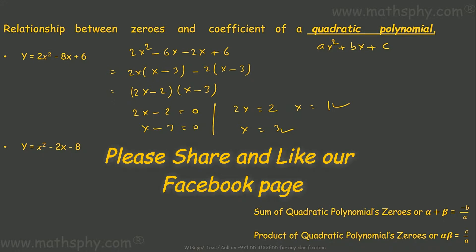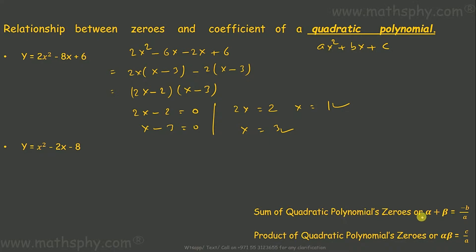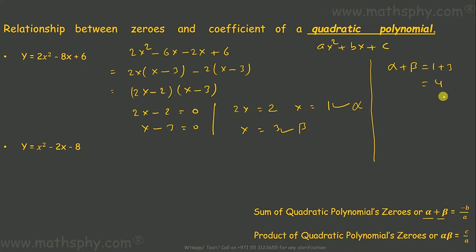Now let's talk about the relationship between zeros and coefficients of a quadratic polynomial. Calling the zeros alpha and beta, the sum of zeros alpha plus beta equals negative b over a. Adding our zeros: alpha is 1, beta is 3, so alpha plus beta is 4. Let's verify this without factorization using the formula.